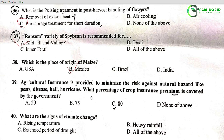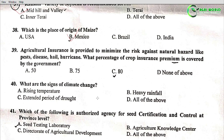Question 39: Agricultural insurance is provided to minimize the risks against natural hazards like pest, disease, hail, and hurricane. What percentage of crop insurance premium is covered by the government? Options: 50%, 75%, 80%, none of the above. The correct answer is 80%.